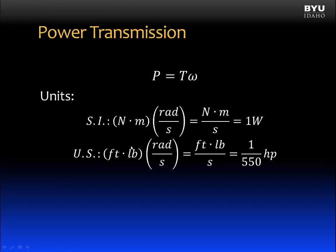In US units, the units for torque are often given in inch-pounds or also foot-pounds. Angular velocity is the radians per second. This produces units of foot-pounds per second, which is equal to 1 over 550 horsepower. In other words, 550 foot-pounds per second is equal to 1 horsepower.